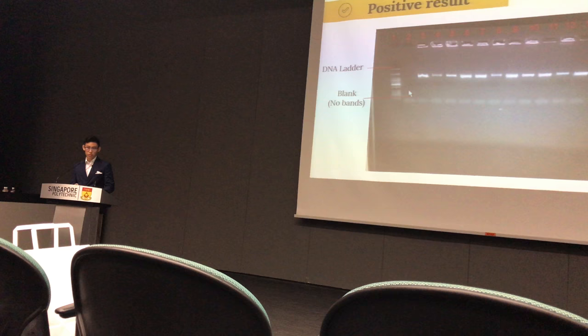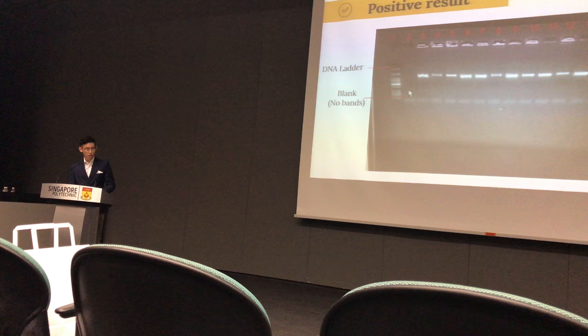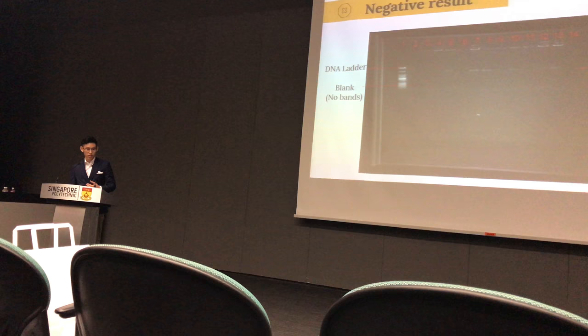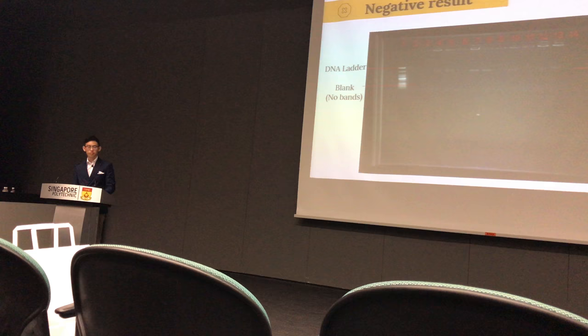As an example of a positive result, looking at wells number 3 to 14 which contained samples, distinct bands were present. For well number 2, which contained the negative control, no bands were present, indicating that contamination did not take place, thus illustrating a successful part of our experiment. In contrast, an example of a negative amplification result shows no distinct bands present for wells 3 to 14, meaning amplification had not taken place.